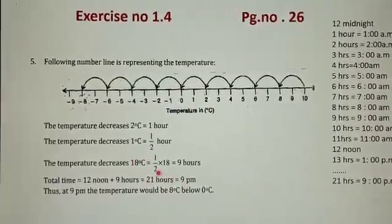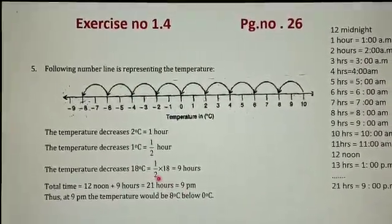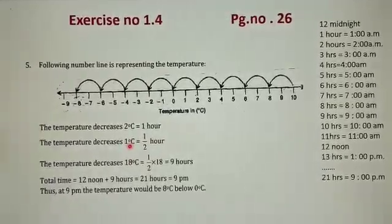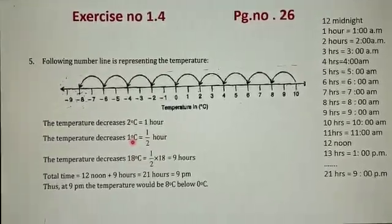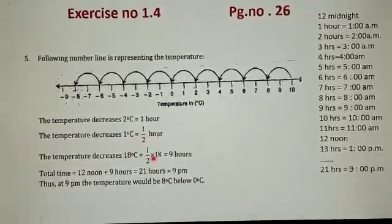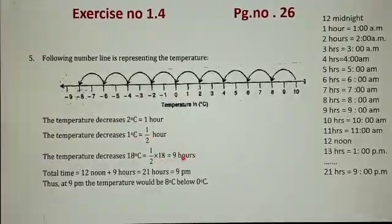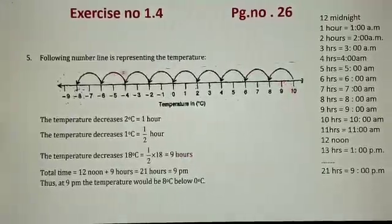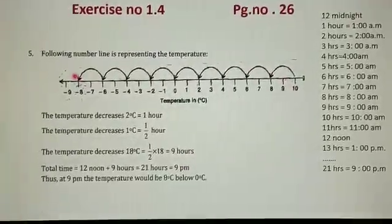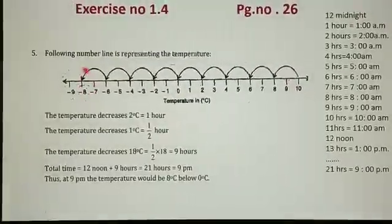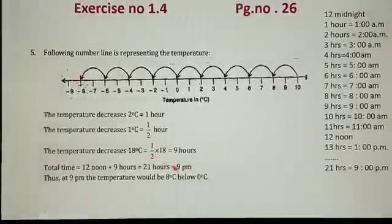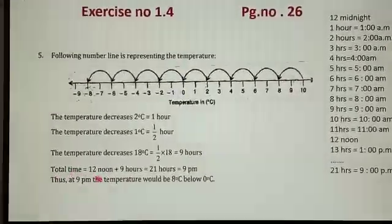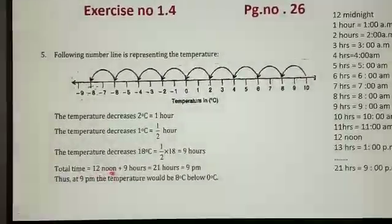18 multiplied by one half, because in half an hour the reduction in temperature is 1 degree. So half multiplied by 18 equals 9. It means a total of 9 hours. In 9 hours the temperature will reduce by 18 degrees Celsius.